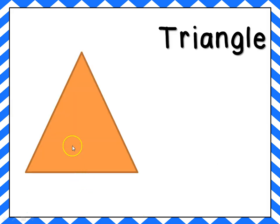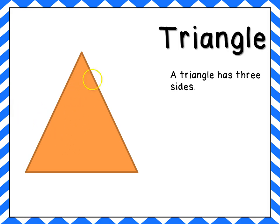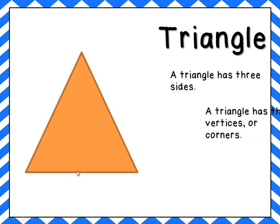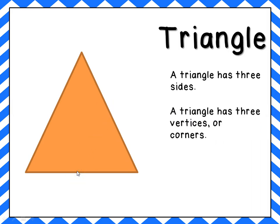A triangle. A triangle has three sides: one, two, and three. And the triangle has three vertices or corners: one, two, three.